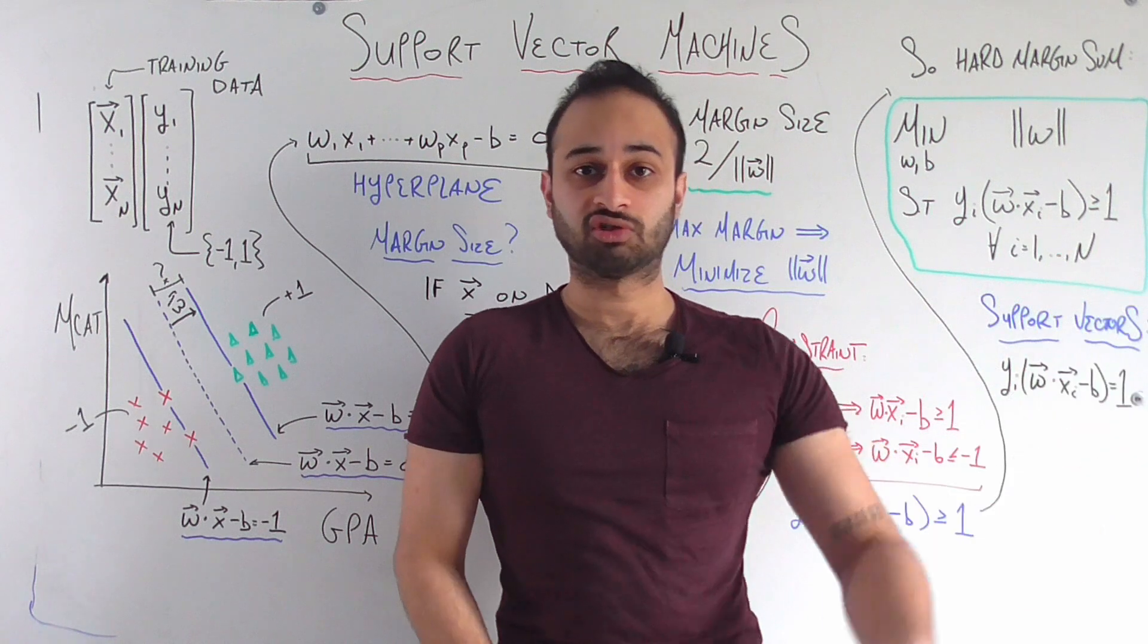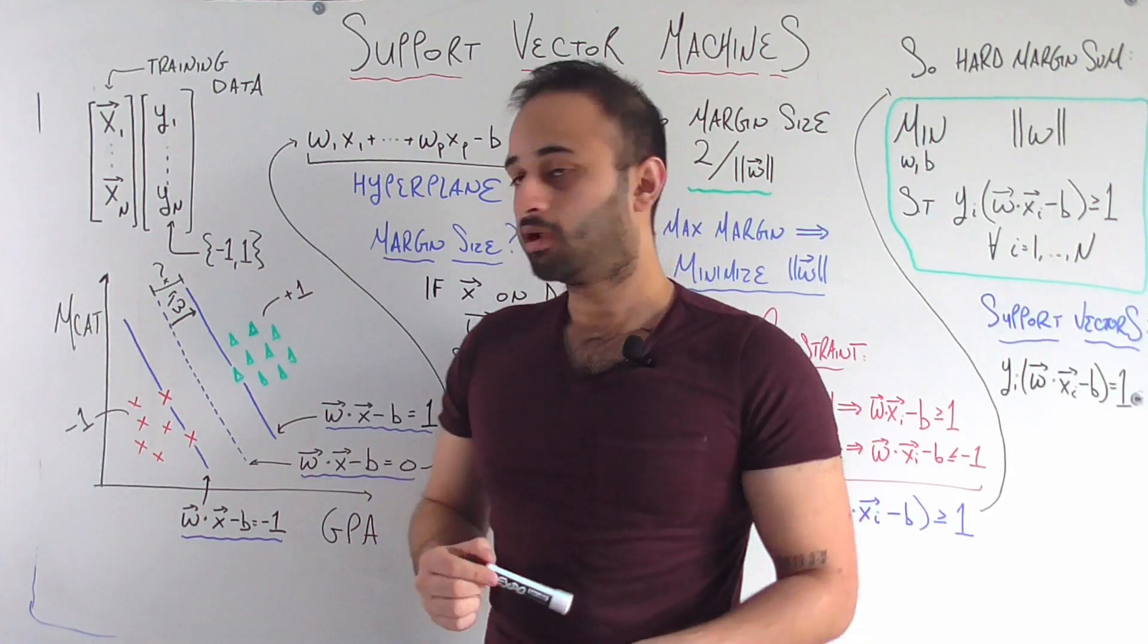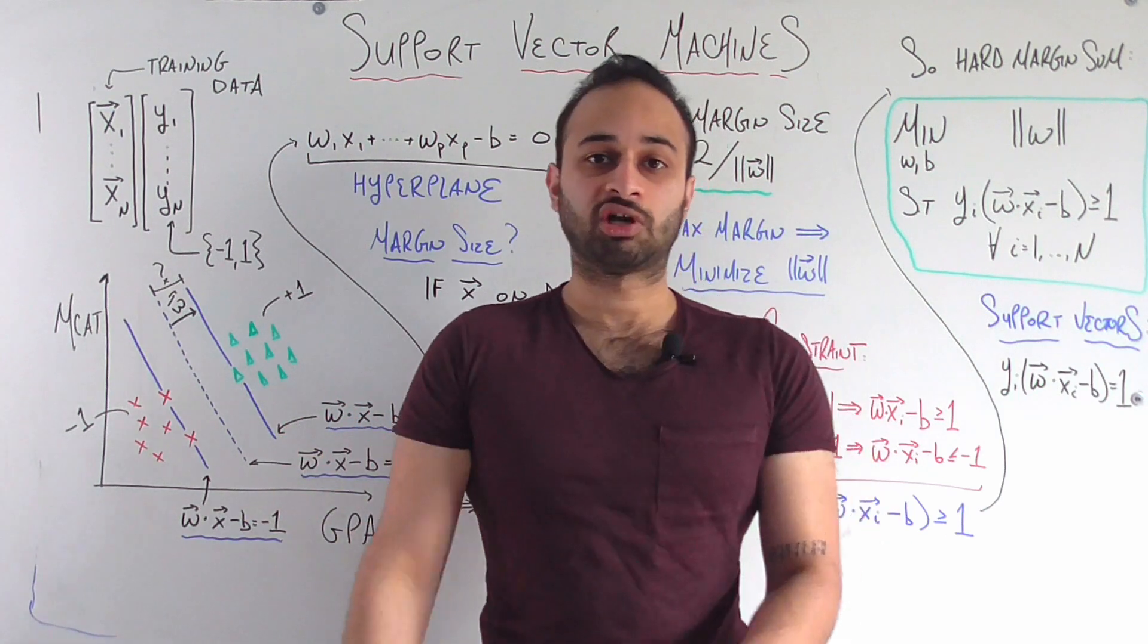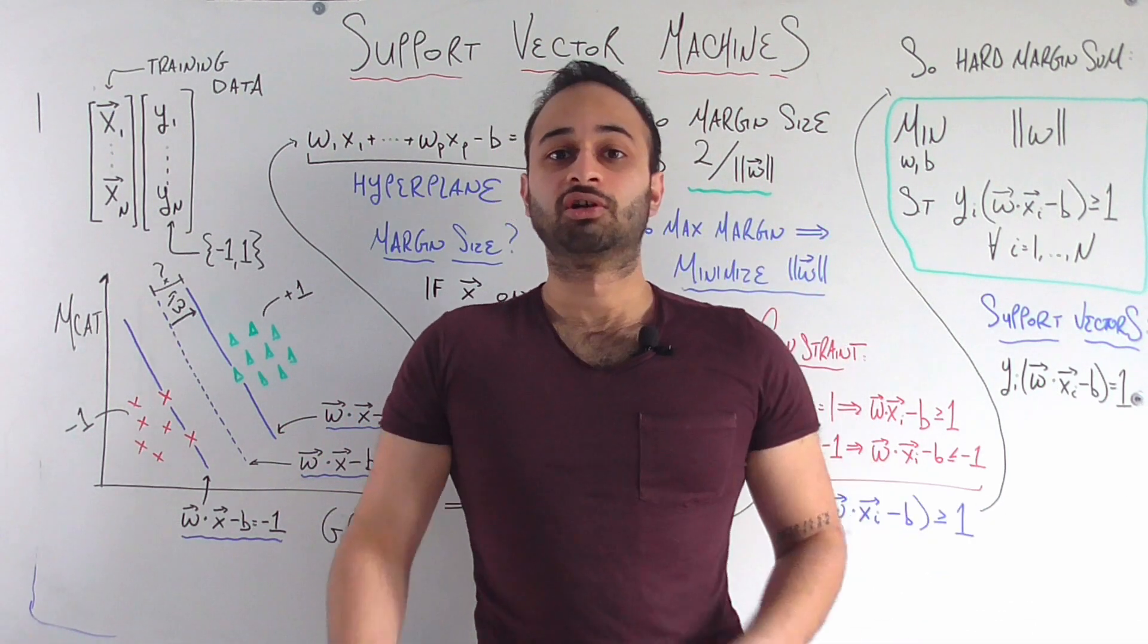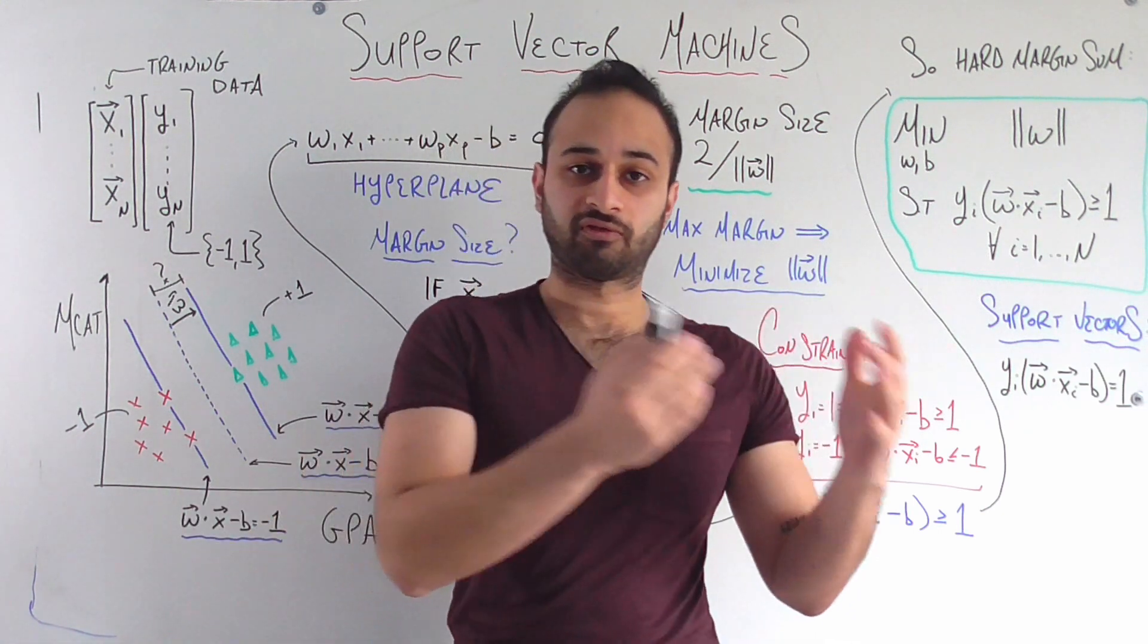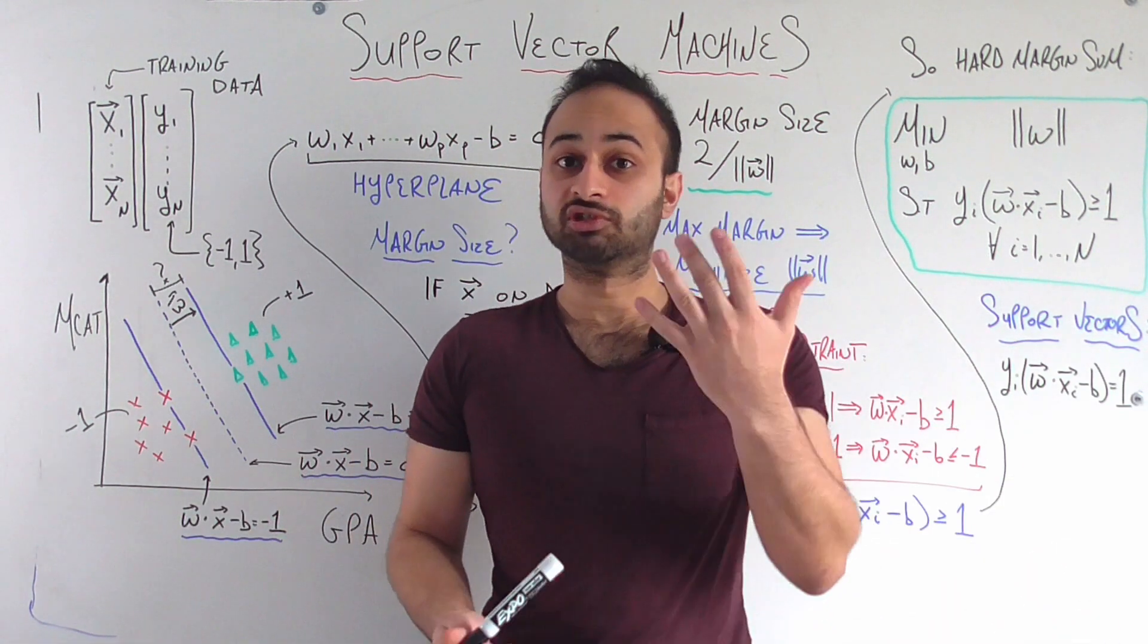For each student we also have a response. yi is going to be either 1 or negative 1, 1 if the student does get in, negative 1 if they do not. Our machine learning problem for today is trying to build some kind of model that's going to use the predictors and try to figure out the response. And we'll be using an SVM.